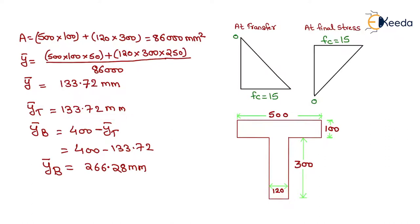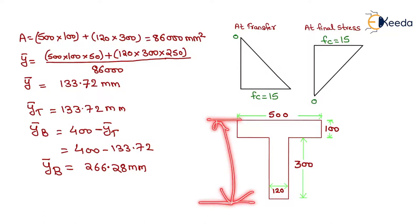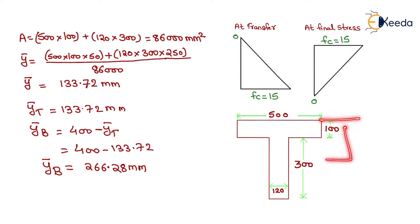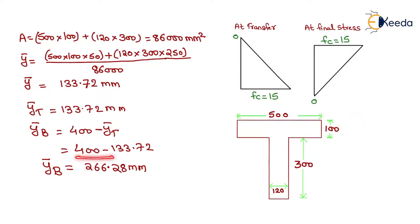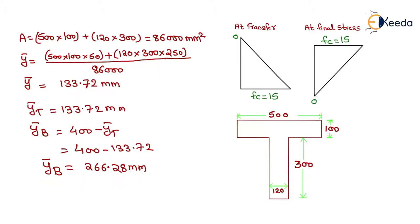Now we will find Ȳ from the bottom. It will be total depth 400 minus Ȳ from top, so 400 minus 133.72, giving Ȳ_bottom equals 266.28 mm.